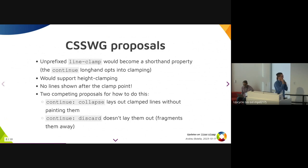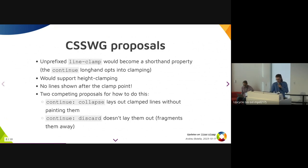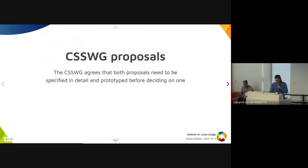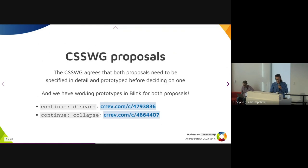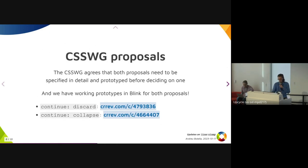Continue Collapse lays out the clamped lines without painting them. Continue Discard does not lay them out. Both proposals need to be specified in detail and prototyped before deciding on one, and we actually have working prototypes in Blink for both of them with CLs.